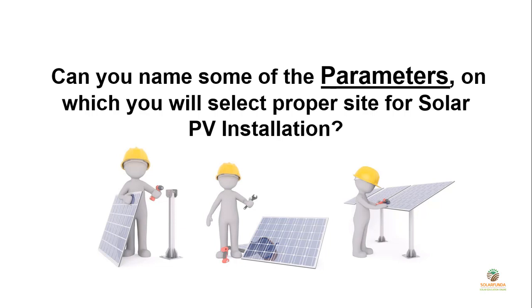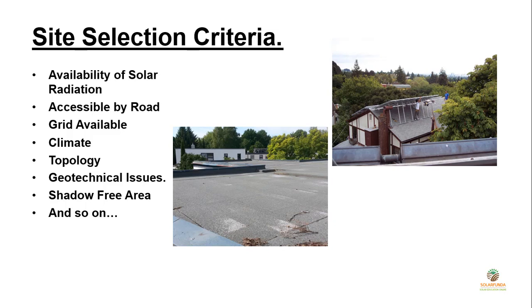Can you name some of the parameters for selecting a proper site for solar PV installation? These are the site selection criteria. You have to check whether solar radiation is available on the site. Is the site accessible by road? This is very important during material delivery. Is the grid available on site? Based on that, we will decide to go on-grid or off-grid. Check the weather, climate, and topology of the site. What are the geological issues there? How much shadow-free area is available?